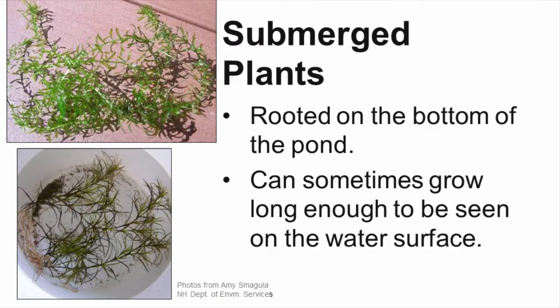Submerged plants are those that are rooted on the bottom of the pond. Ponds with shallower water offer the best growing conditions for these types of plants as sunlight can reach the pond bottom. Many times, these plants will begin on the bottom of the pond and can often grow long enough where they may stick out of or float on top of the water.